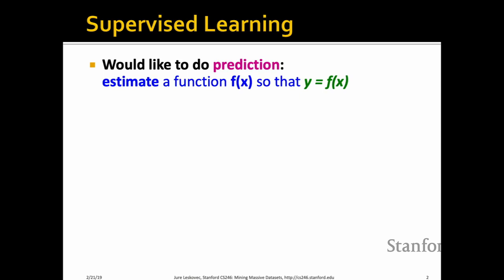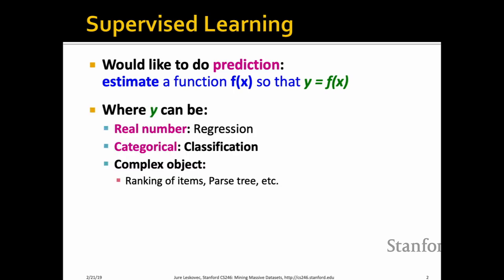First, let's do a quick refresher on supervised learning so we don't get lost throughout the lecture. We want to execute a prediction task: we have a function F of X, and we want to predict a label Y. Y can take many different shapes — it can be a real number, in which case we have a regression problem; it can be categorical data, in which case we have a classification task; and it can also be complex objects like ranking items or parse trees in NLP and so forth.